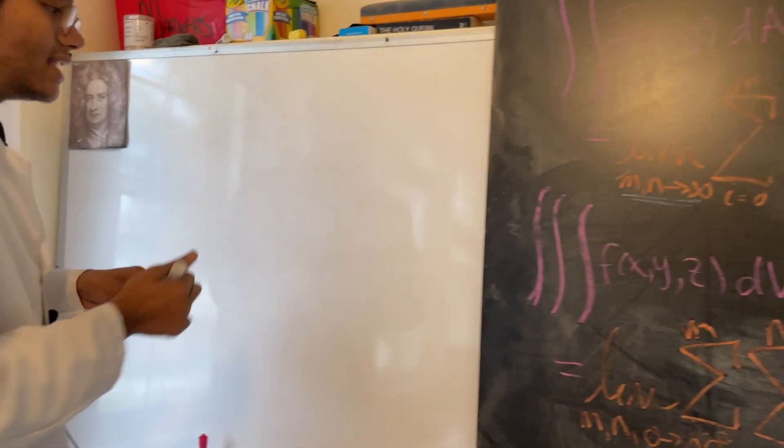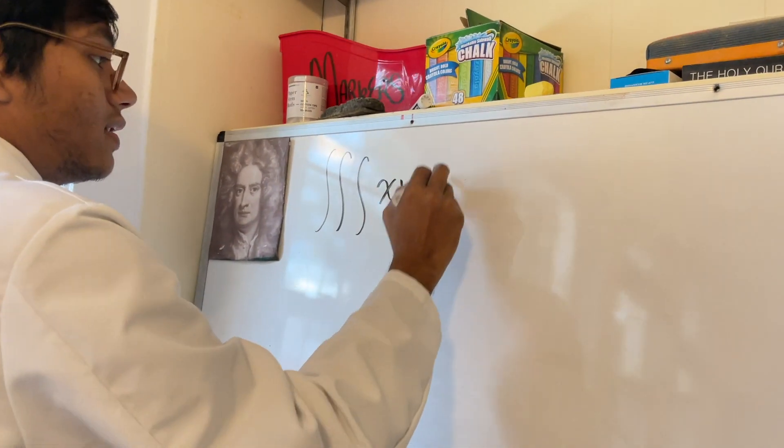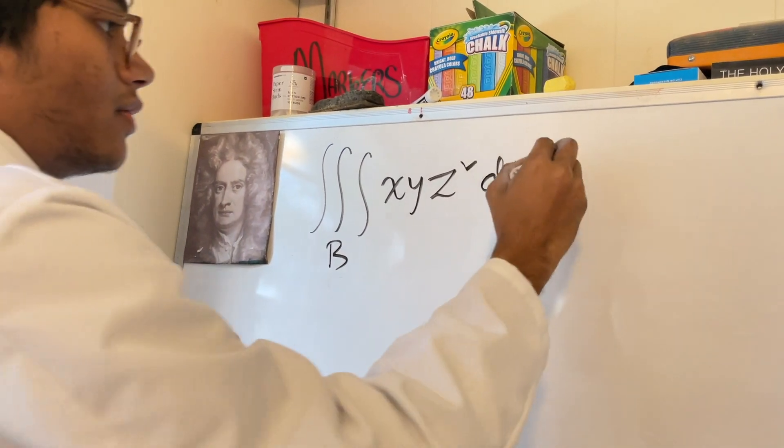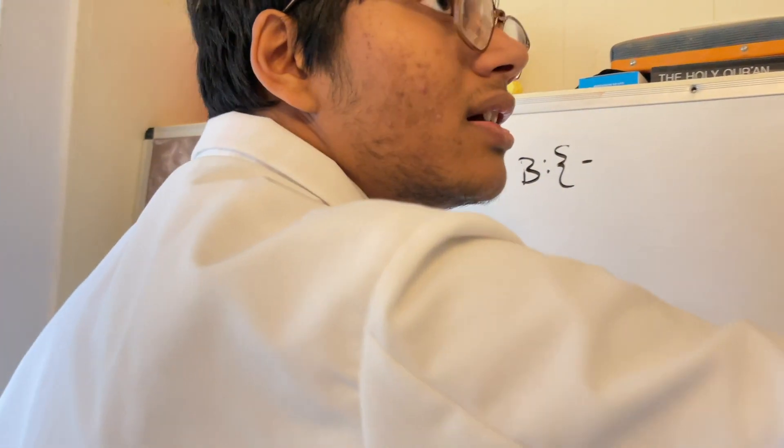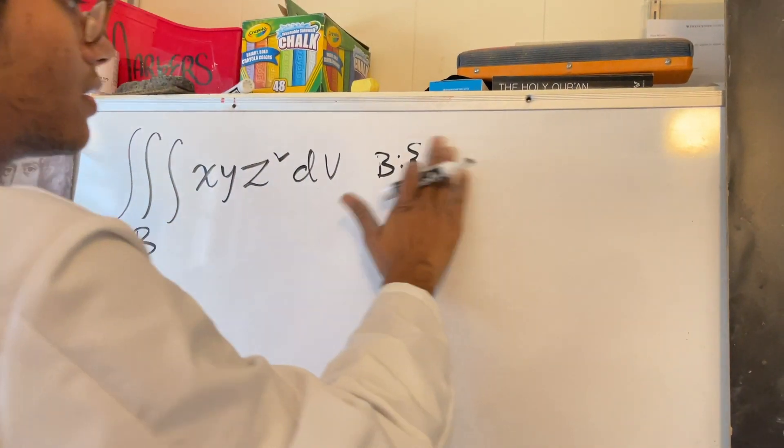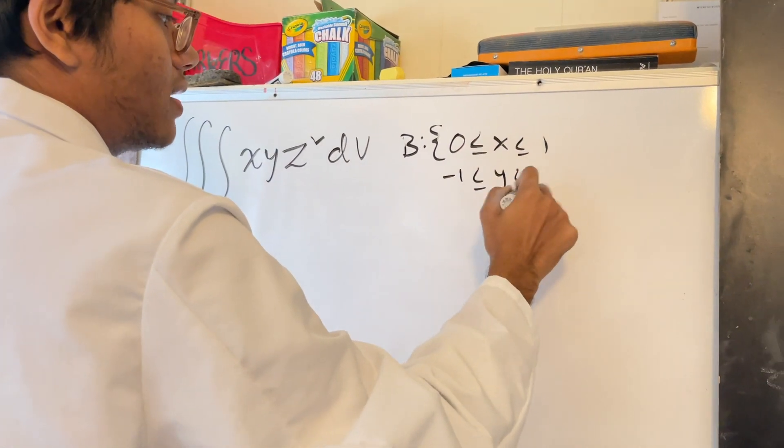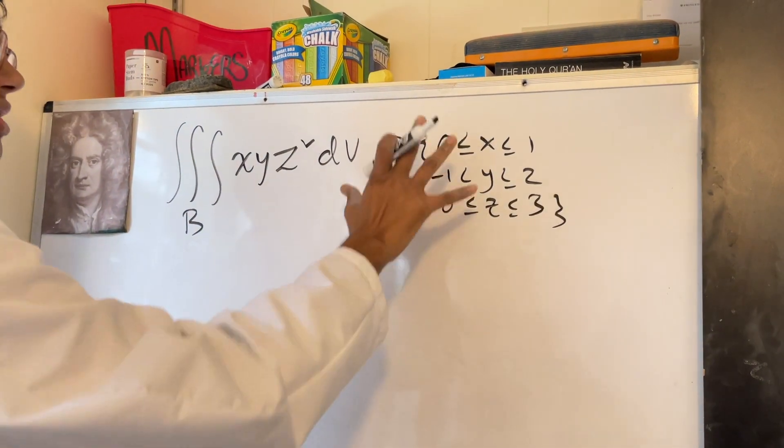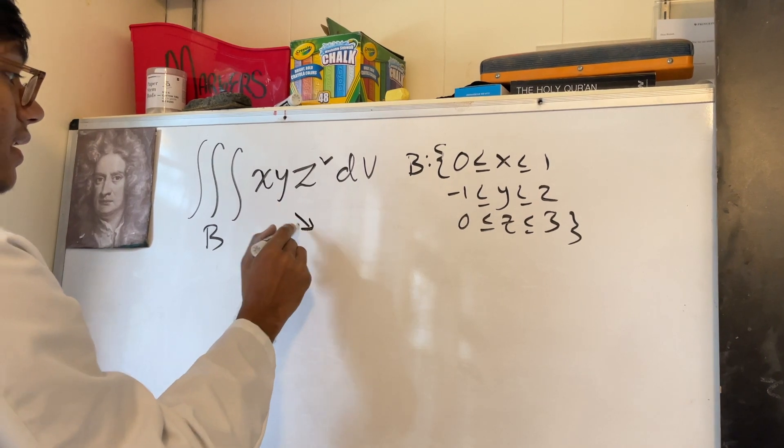Now we're going to finally start the integration. We're going to integrate XYZ² over the volume, over this volume B, where B is: X is between 0 to 1, Y is between -1 and 2, and Z is between 0 and 3. These are going to be our limits of integration for each variable. So let's go ahead and do this.